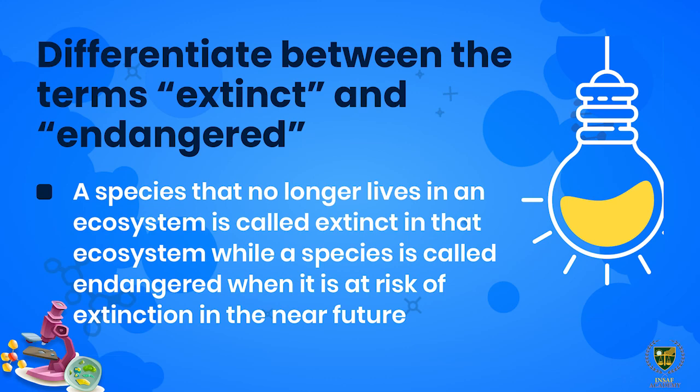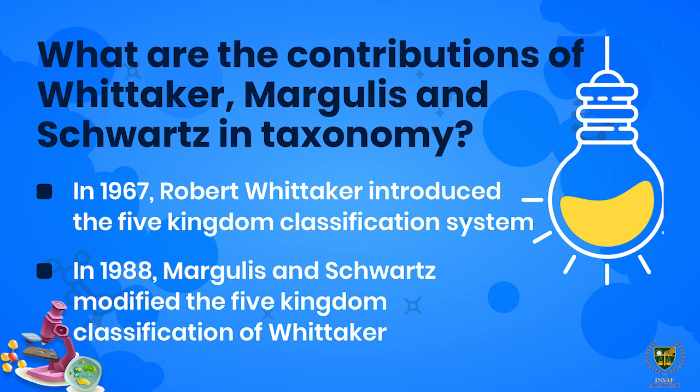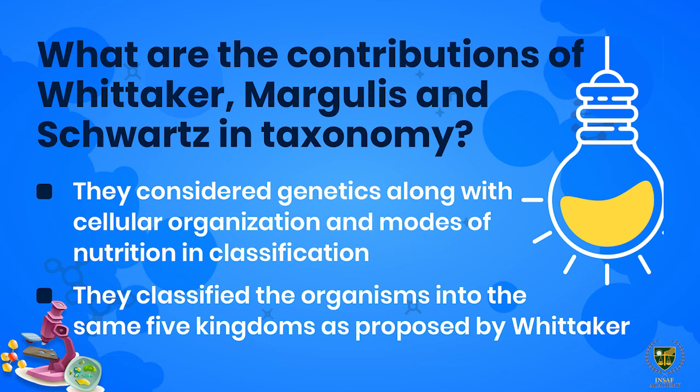Next statement: What are the contributions of Whittaker, Margulis, and Schwarz in taxonomy? In 1967, Robert Whittaker introduced the five kingdom classification system. In 1988, Margulis and Schwarz modified Whittaker's five kingdom classification — they considered genetics along with cellular organization and modes of nutrition in classification. They classified organisms into the same five kingdoms as proposed by Whittaker.